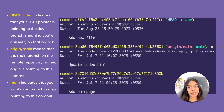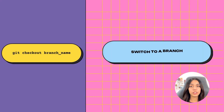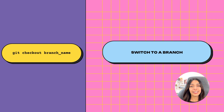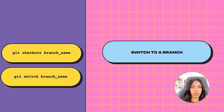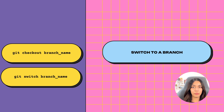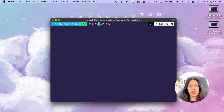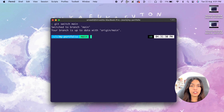You can go back to your main branch and create another commit. To switch between branches without creating a new branch, use git checkout branch-name. There's another command that does the same thing: git switch branch-name. Both git checkout branch-name and git switch branch-name do the same thing. Now that you've switched back to main, create a new commit and check git log.